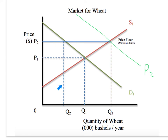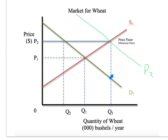Another solution would be for the government to set a quota — so after Q2, nobody else can produce wheat. That's pretty harsh and usually unpopular because many suppliers won't be able to produce, but it would give a guaranteed price to some producers. For both ceilings and price floors, the government gets involved twice: once for the price floor itself, and once for the solution. For a wheat price floor, the government most likely becomes the consumer to push demand outward and eliminate the surplus.